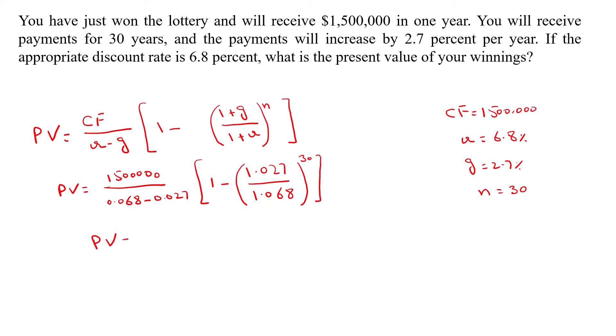And the present value is equal to $25,280,038.83. It means if you receive 1.5 million for one year for 30 years and the amounts will grow by 2.7% and the discount rate is 6.8%, then the present value of this whole amount will be 25.28 million.